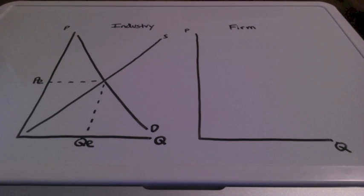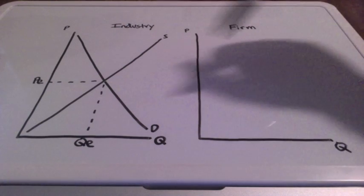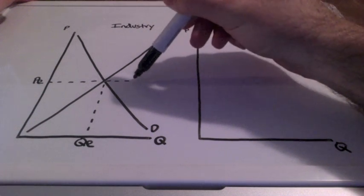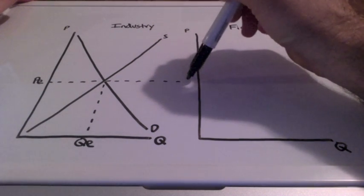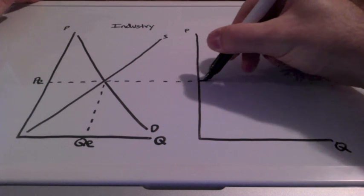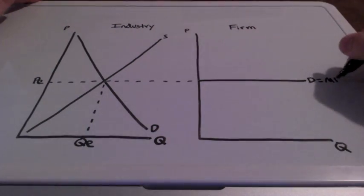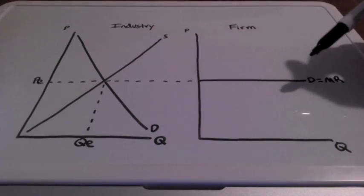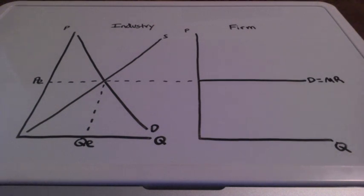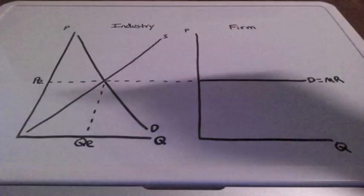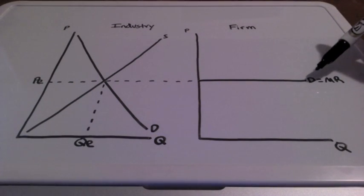In perfect competition, we examine the relationship between the industry and the firm. The industry sets the firm's price and quantity of production, so we bring the price over from the industry to the firm. With perfectly competitive firms, we have a perfectly elastic demand curve — an infinite number of substitutes, all products are identical, and demand equals marginal revenue. The price that the industry sets is what will be demanded by consumers.